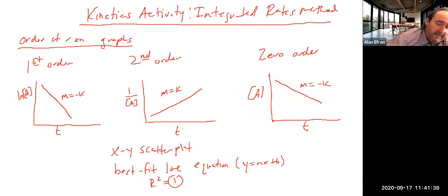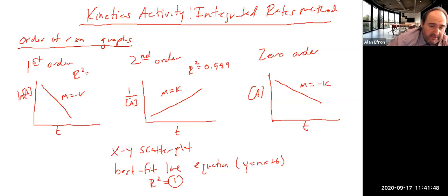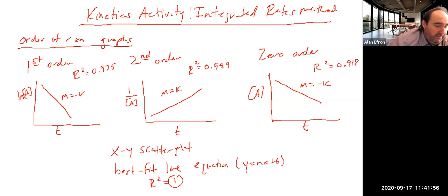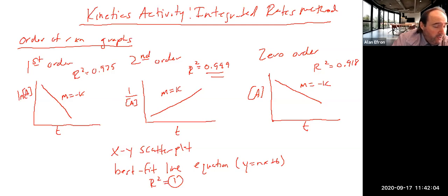For example, on the first set of data, if you plotted all three and the R² for the first order plot was 0.999, the R² for the second order was 0.975, and the R² for the zero order was 0.918 — the first order plot, being closest to 1, would be the order of the reaction. You would say for that reactant the order is going to be second order.